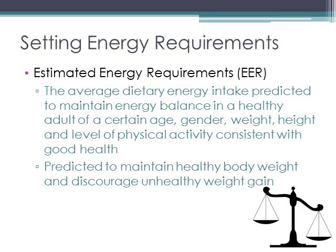The last piece of this segment is about energy requirements. Estimated energy requirements are the average dietary energy intake predicted to maintain energy balance in a healthy adult of a certain age, gender, weight, height, and level of physical activity consistent with good health. These are predicted to maintain healthy body weight and to discourage unhealthy weight gain. The AMDR values for carbohydrates, protein, and fat will help achieve a healthy nutrient balance and also help prevent unhealthy weight gain.